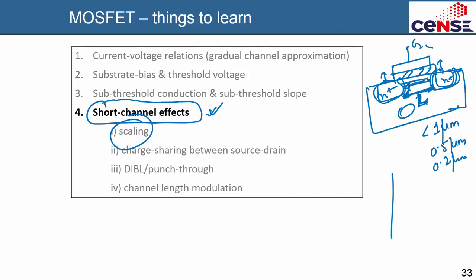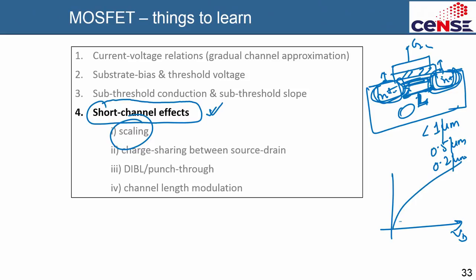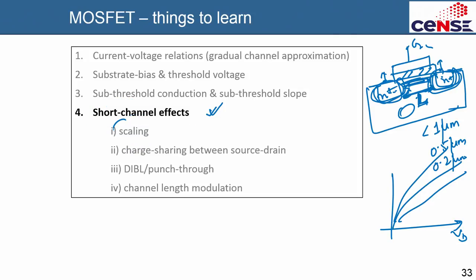In a long channel device, drain current saturates because the drain voltage has no effect on current — but in short channel devices, the drain starts influencing the current and saturation is lost. Short channel effects include: scaling (which enables smaller but problematic devices), charge sharing between source and drain, DIBL (drain-induced barrier lowering) and punch-through, and channel length modulation.